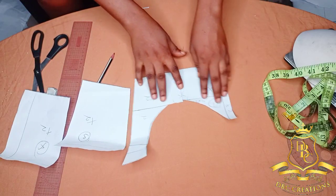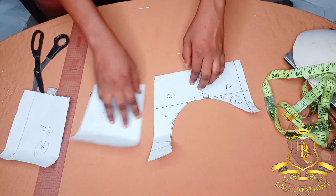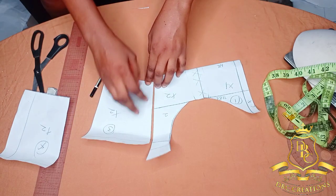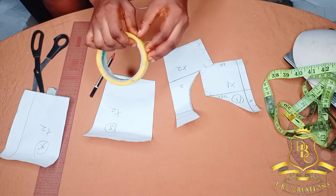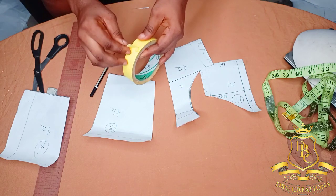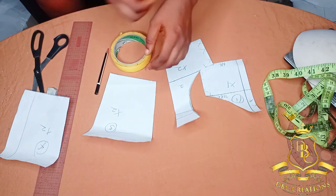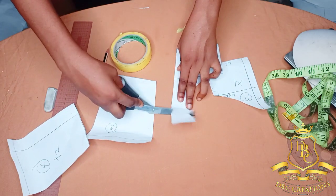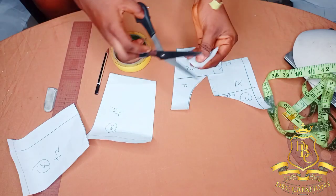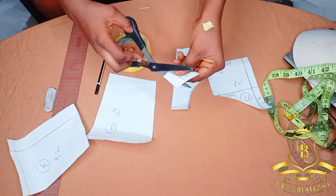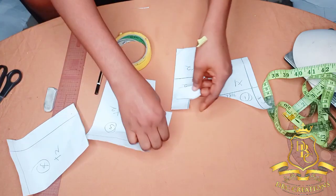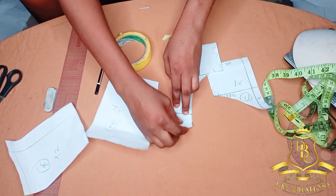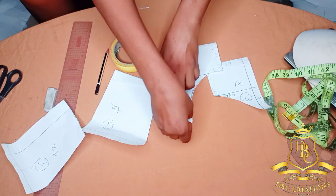This is what I have: my one and my two, then three and four. You can notice that two is longer than three because of the side that we added. So I'm going to cut it out. I have cut out the darts, so I'm going to place it back.